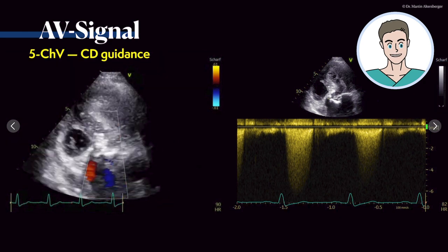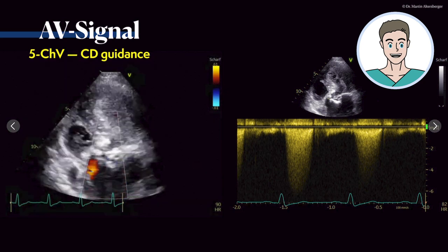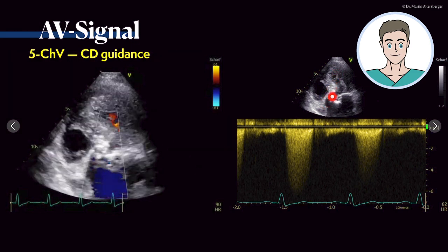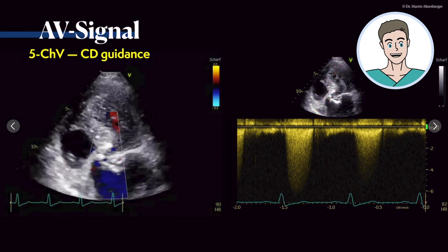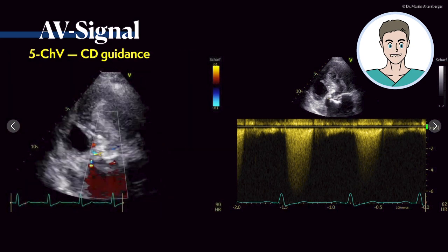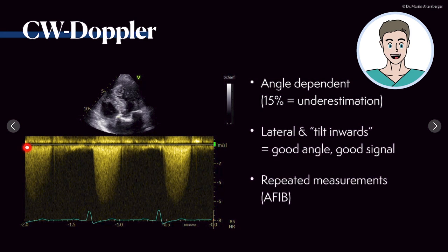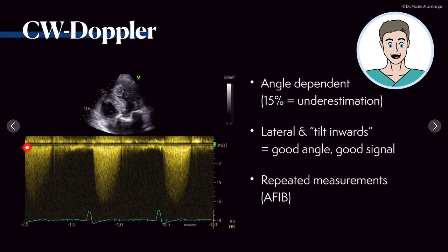The second tip is to simply move the transducer laterally and tilt the beam inward. The aortic valve will move towards an optimal alignment of the continuous wave Doppler — like a focused right transtricuspid view — and this way you can optimize the signal. Continuous wave Doppler is angle-dependent, so if you're off it leads to underestimation. Moving lateral and tilting inward gives a better signal, because a good angle equals a good Doppler signal. In cases of atrial fibrillation, you need repeated measurements to accurately display the true velocity of the aortic valve.